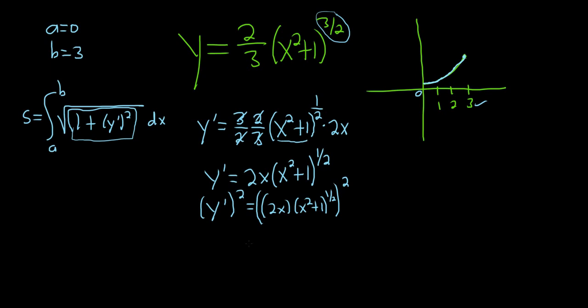So y prime squared, squaring everything we have 2x and then this piece here x squared plus 1 to the 1 half squared. When you square the 2x that turns into 4x squared, and when you square the second piece you multiply the 2 and the 1 half so they cancel, so you just get x squared plus 1. It turns out we can actually distribute the 4x squared now, so 4x squared times x squared will give us 4x to the fourth and 4x squared times 1 will give us 4x squared.